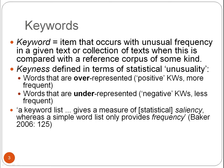Words that are over-represented are positive keywords, meaning that they are more frequent than in the reference corpus. Words that are under-represented are negative keywords, meaning they are less frequent than in the reference corpus.